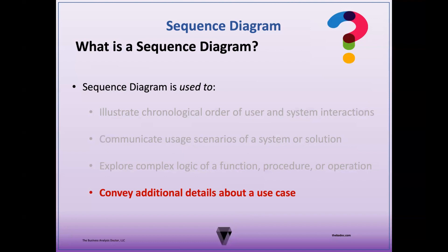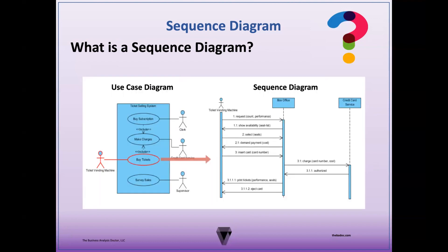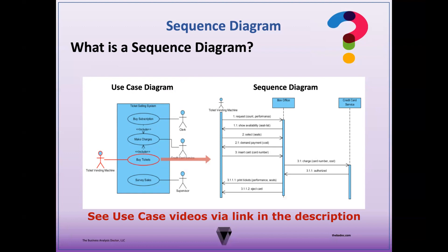Let's explore this usage a little further. A key feature of the sequence diagram is that it illustrates the order or sequence in which events take place, which is a function that a use case diagram does not serve. When a particular use case within a use case diagram needs to be further explored, it can either be outlined as a use case description or exploded into a use case diagram. You can learn more about use case diagrams and use case descriptions from the link in the description.